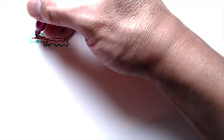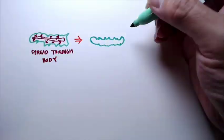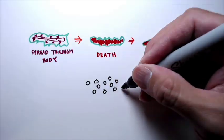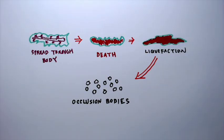Eventually, the viruses spread through the body, causing the caterpillar to die and liquefy, releasing viruses within occlusion bodies that are eaten by other caterpillars.